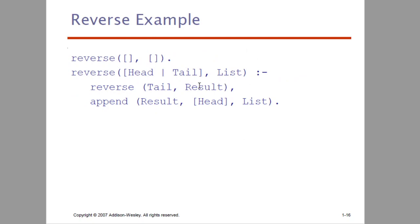Next, we have reverse. Given a list, we have to reverse it. The first element is the head and tail. The inference rule is: tail reversed, then append result with head to get the final list. The result is the reverse. We append the original elements in reversed order. That is the reverse example.